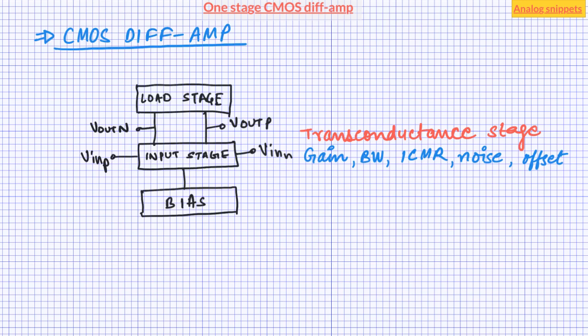The load stage defines gain, bandwidth, output common mode range, and supply rejection properties. The bias stage defines current consumption, input common mode range, common mode rejection, and slew rate.